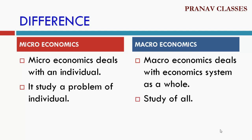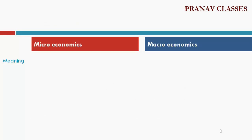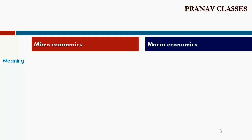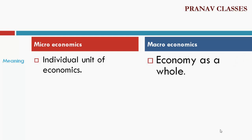Microeconomics studies the problem of an individual, while macroeconomics studies the problems of all the people or of the country. For example, microeconomics is the study of a tree, and macroeconomics is the study of the forest. In terms of meaning, microeconomics deals with individual units of economics, whereas macroeconomics studies the economy as a whole.